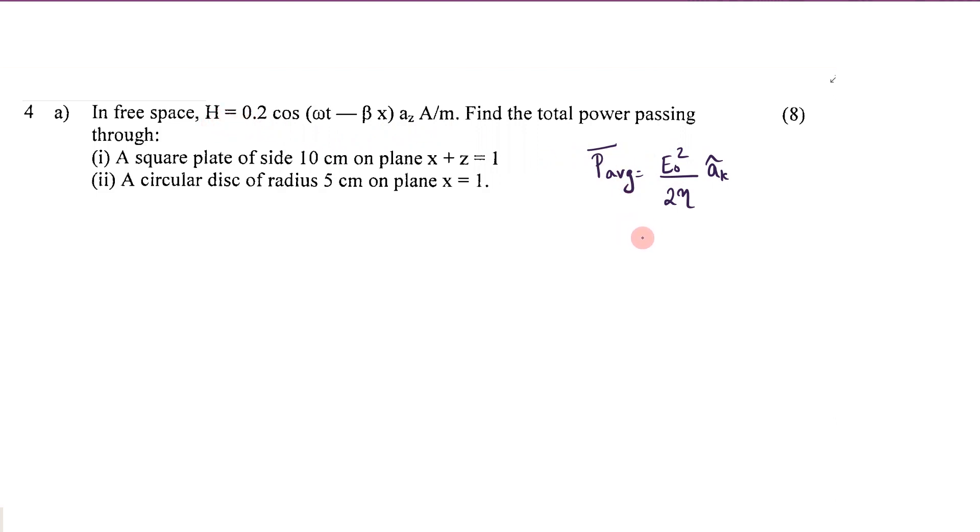How can you relate E and H with eta? You know that E0 divided by H not is equal to eta. In free space it is given as a real value. So E0 square you can substitute as eta H not whole square. So P average will be eta square H not square by 2 eta into unit vector ak, that will be 1 half eta H not square ak.